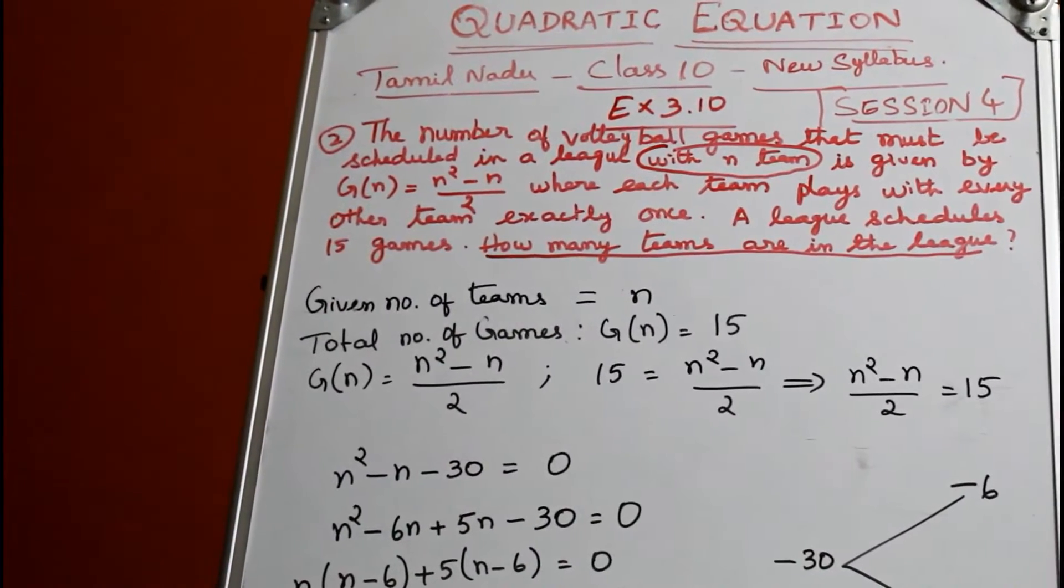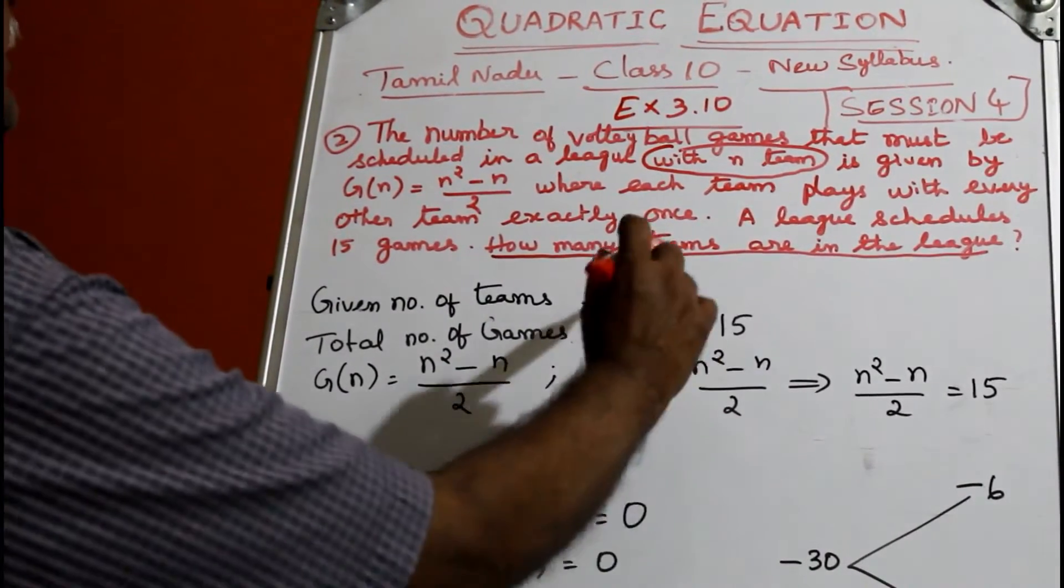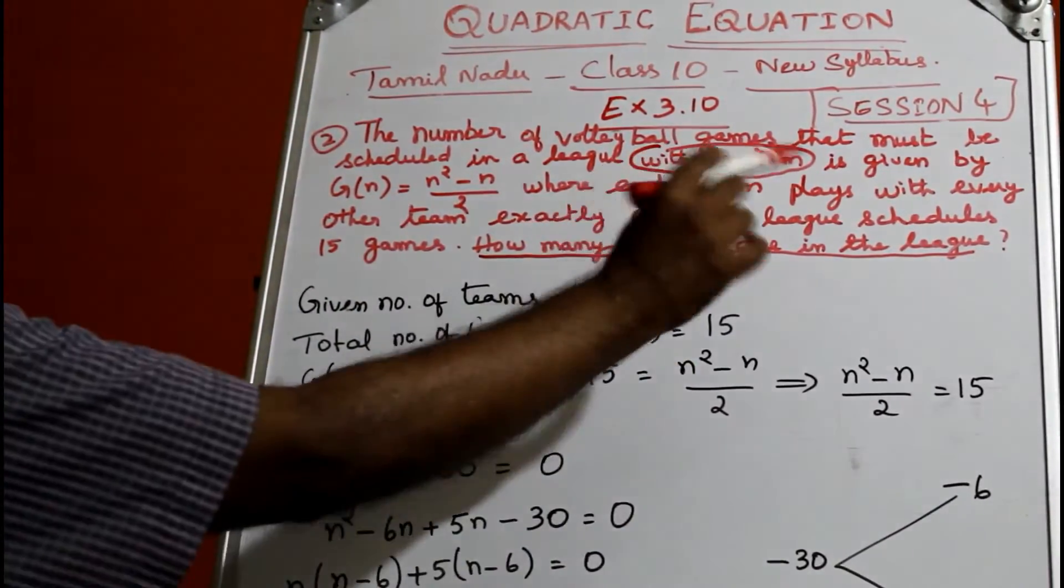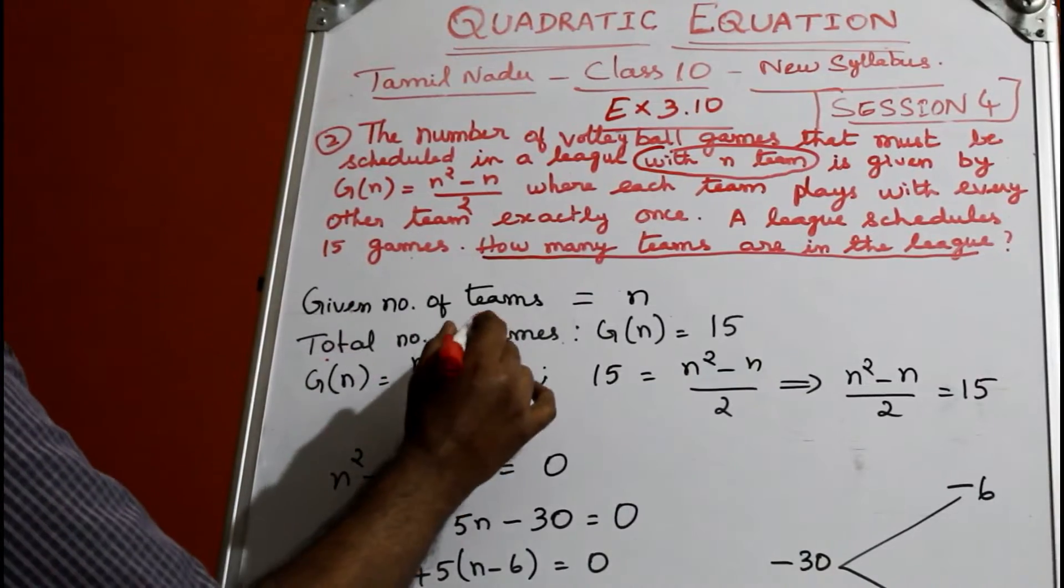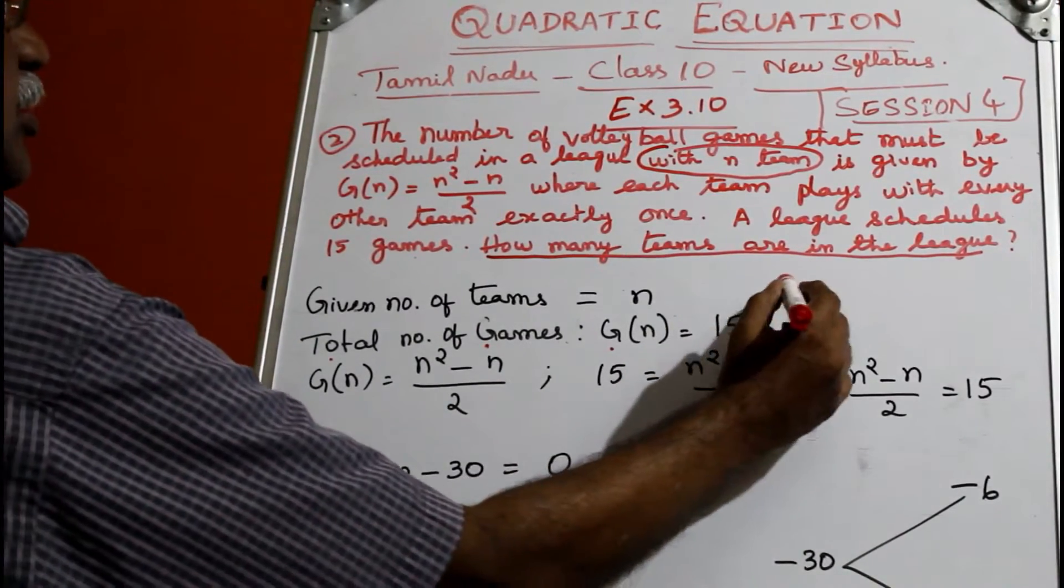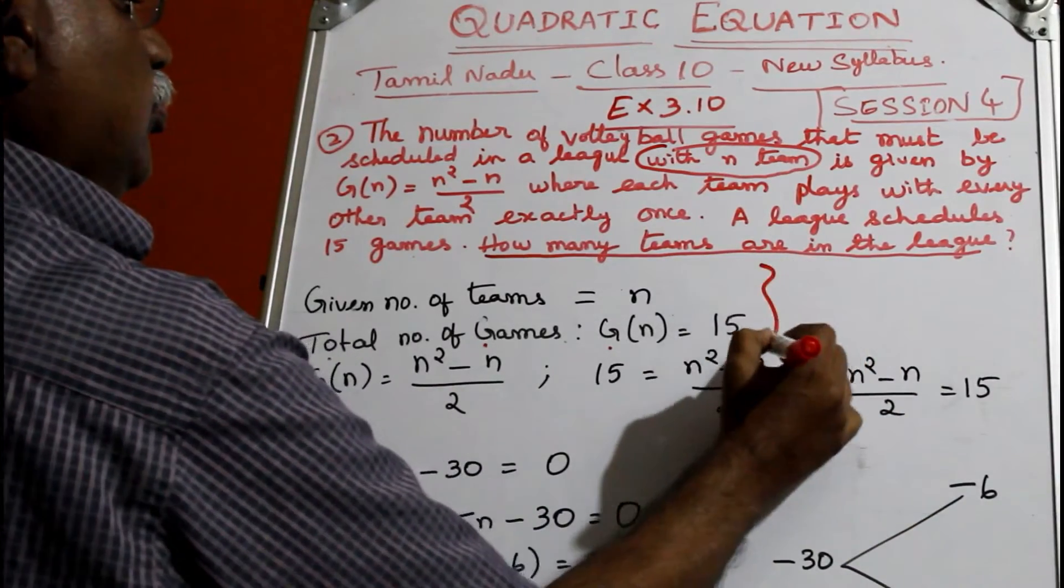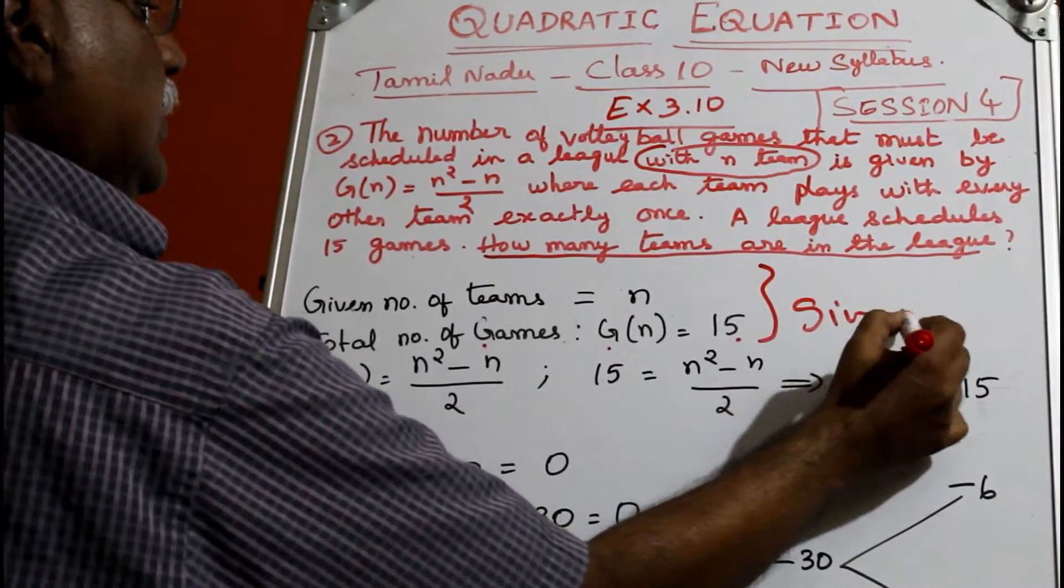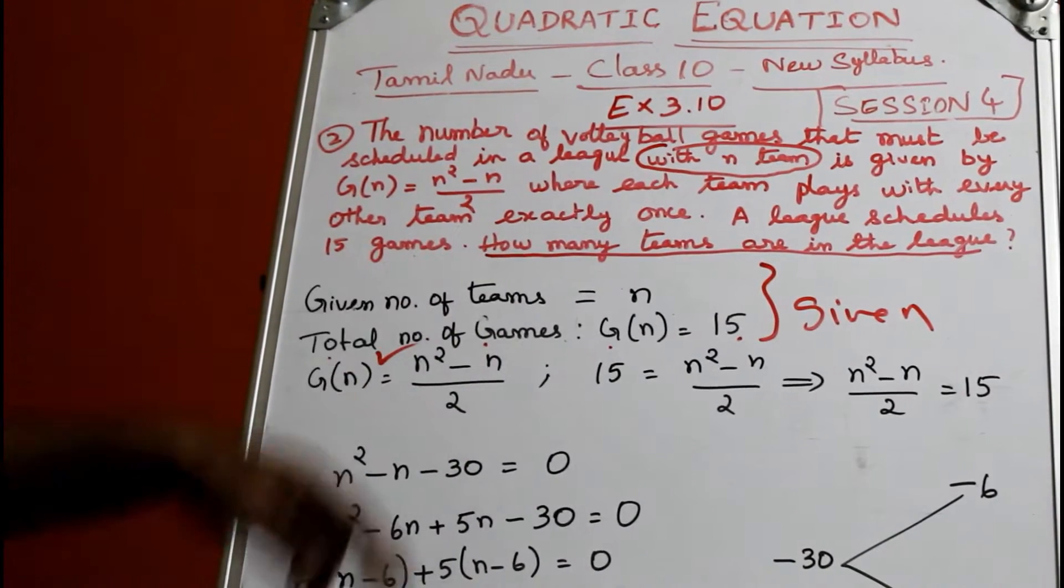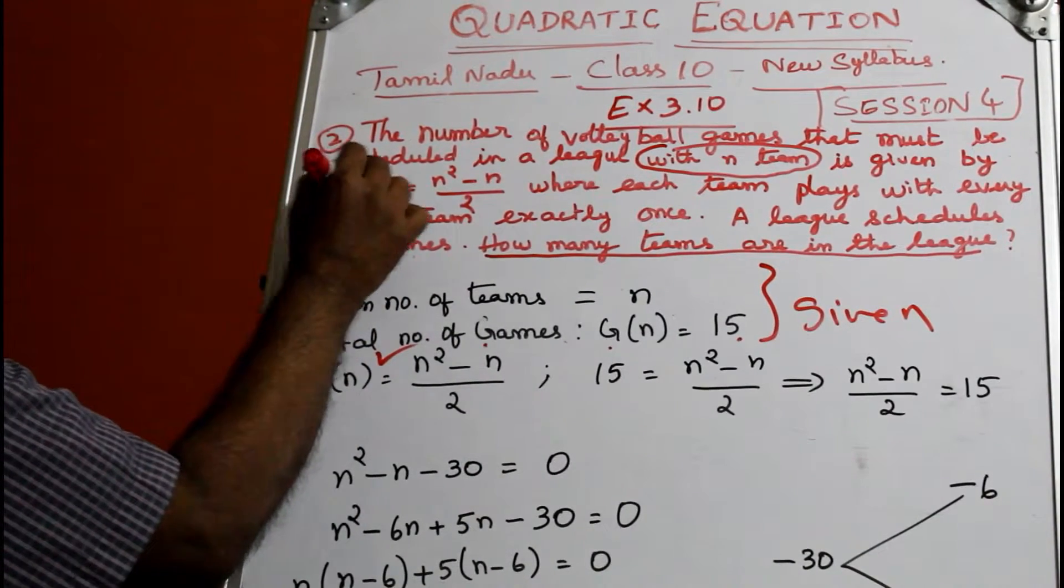Each team plays with every other team exactly once, and the league schedule is 15 games. So total number of games, G(n), equals 15. This and this are both given, and G(n) = (n² - n)/2 is also given.